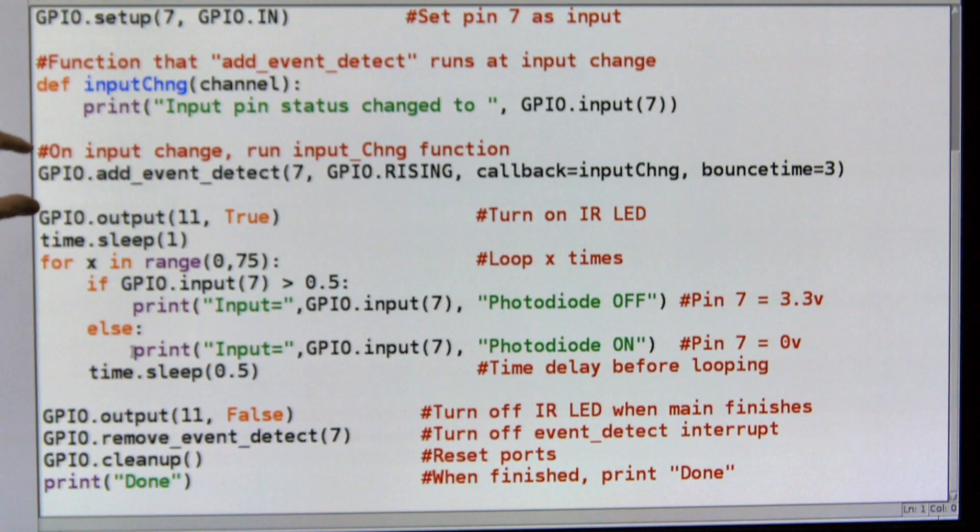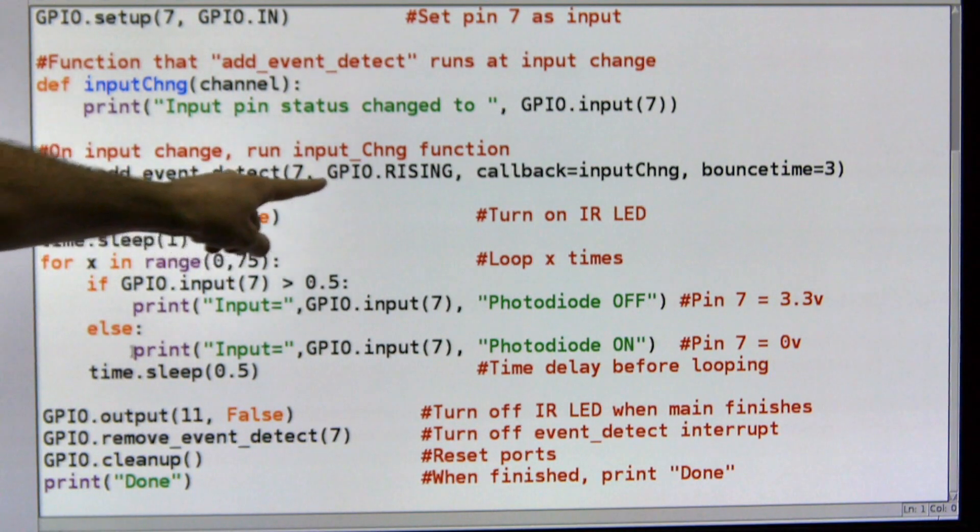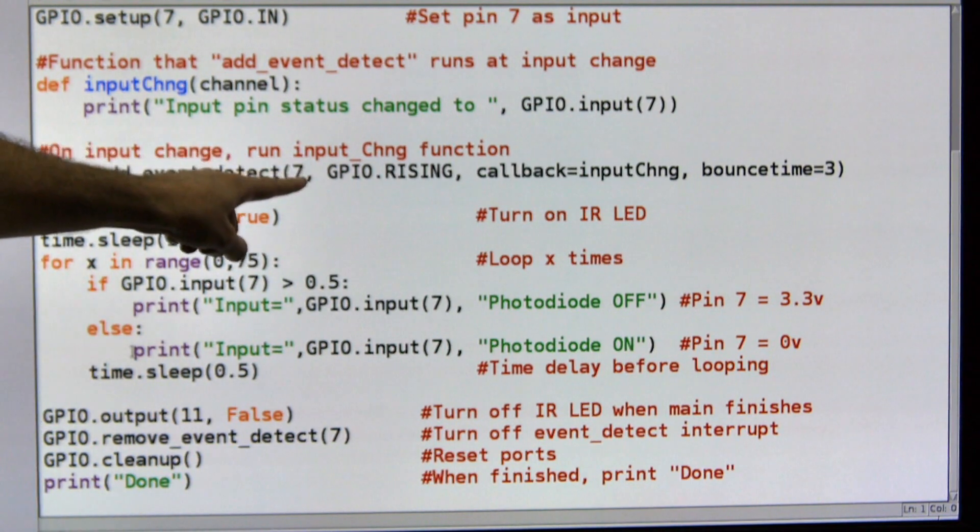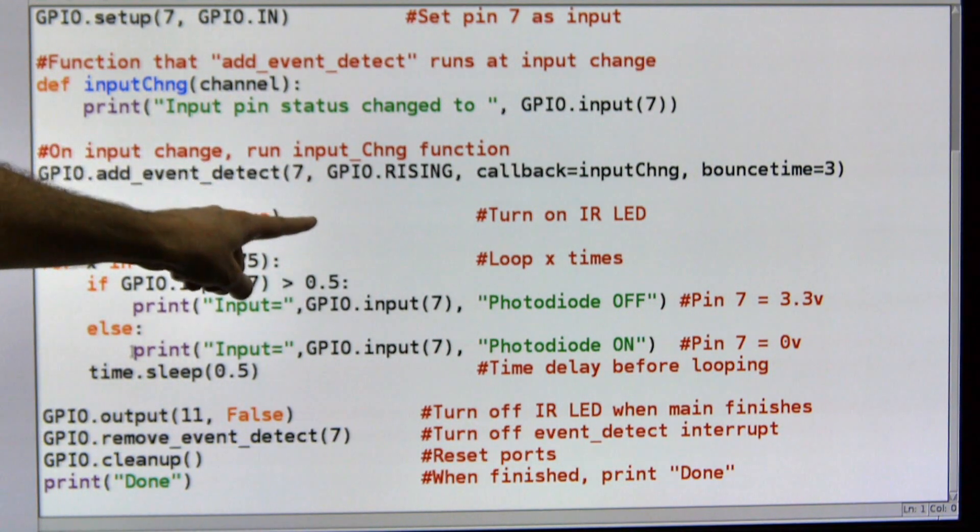Here's the interesting part. This is an interrupt. What I've done is I've set up an interrupt on pin 7, on GPIO rising. That means when pin 7 is increasing in value, it will interrupt the program.